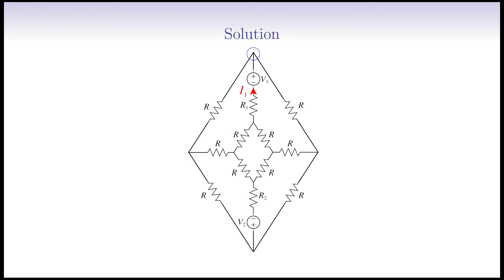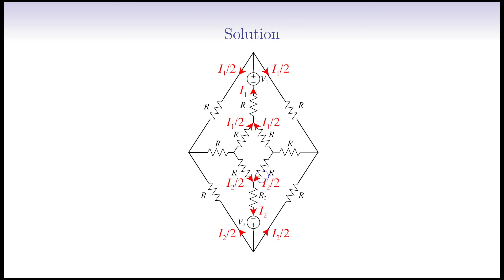We start by writing KCL for node A. Current I1 is incoming toward node A, and two equal currents are leaving the node, so each branch takes half of I1. We can easily do this for node C: since current I1 is leaving the node, the two incoming currents should be half of I1. Current I2 is entering the bottom node F, and so each outgoing branch takes half of I2. Also, each of the two incoming currents towards node D should be half of I2. On the rightmost node G, half of I1 and half of I2 is incoming, so (I1 plus I2) divided by 2 is leaving the node. Checking KCL for node G confirms everything matches perfectly.